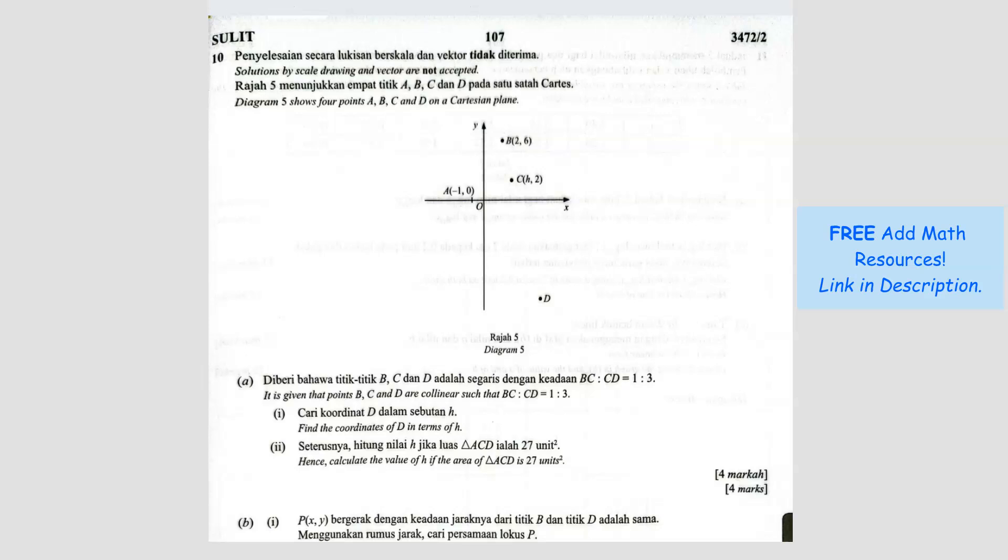Question number 10. Diagram 5 shows 4 points A, B, C, D on a Cartesian plane. It is given that A, B, C are collinear such that BC to CD is 1 to 3. So that means it's going to be a straight line here because it's collinear. And we also know that the ratio BC to CD is 1 to 3.